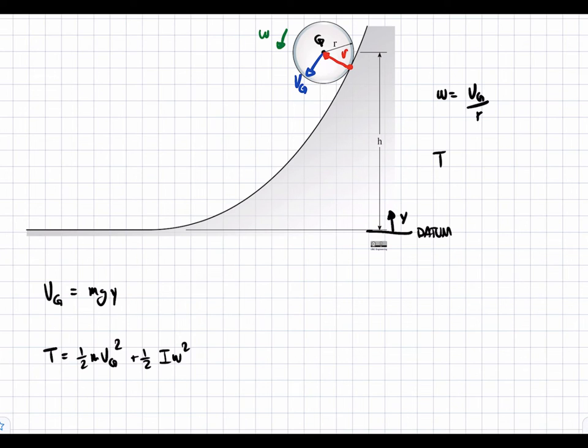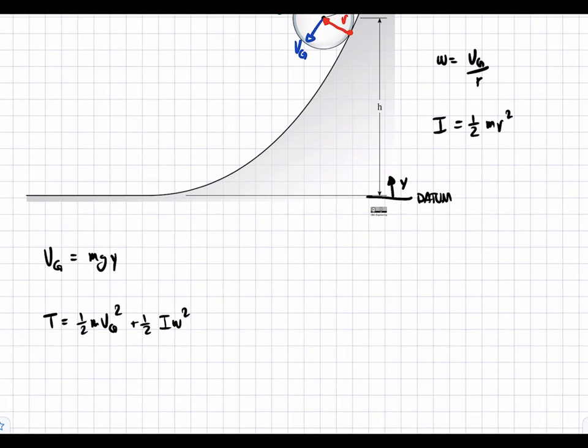The other thing is, in the question, it says we can assume that the wheel is a disk. So, I for a disk is one-half m r squared. And this is just because it's a disk.